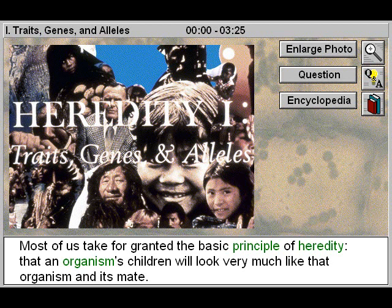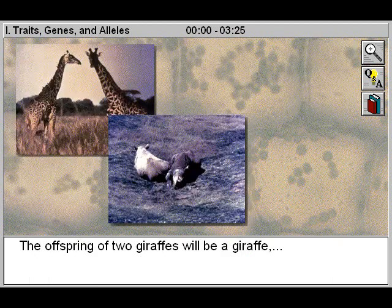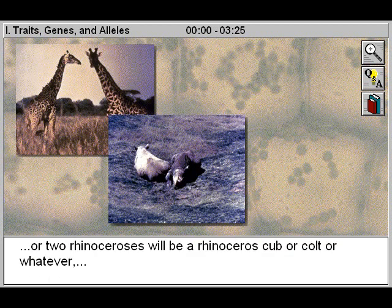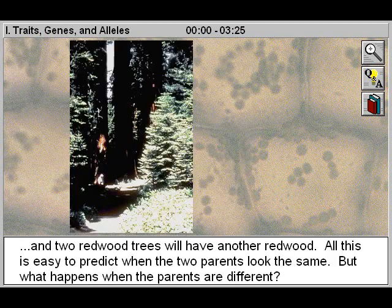Most of us take for granted the basic principle of heredity, that an organism's children will look very much like that organism and its mate. The offspring of two giraffes will be a giraffe, two rhinoceroses will be a rhinoceros, and two redwood trees will have another redwood. All this is easy to predict when the two parents look the same.